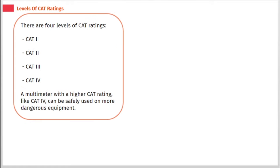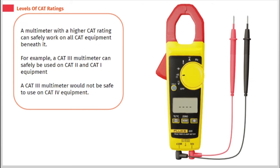There are 4 levels of CAT ratings: CAT 1, CAT 2, CAT 3, and CAT 4. A multimeter with a higher CAT rating, like CAT 4, can be safely used on more dangerous equipment. A multimeter with a higher CAT rating can safely work on all CAT equipment beneath it. For example, a CAT 3 multimeter can safely be used on CAT 2 and CAT 1 equipment. A CAT 3 multimeter would not be safe to use on CAT 4 equipment.